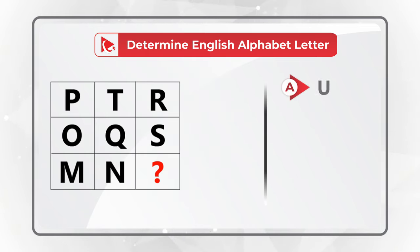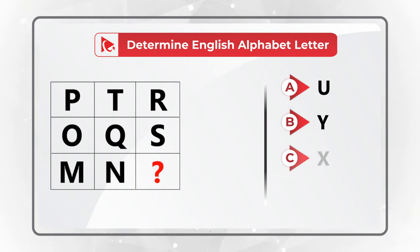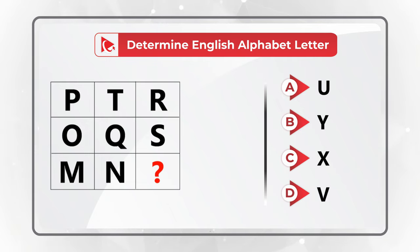Choice A: U. Choice B: letter Y. Choice C: letter X. And Choice D: letter V. Do you see the answer? Give yourself a little bit of time to see if you can come up with the solution.